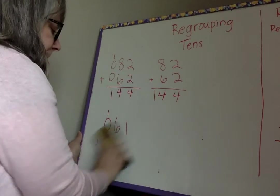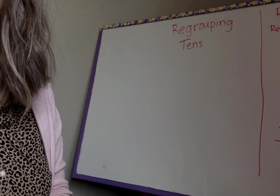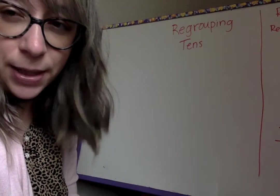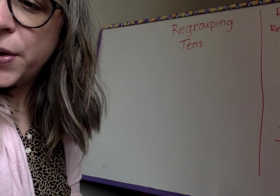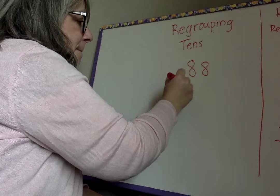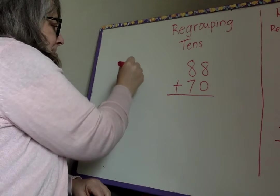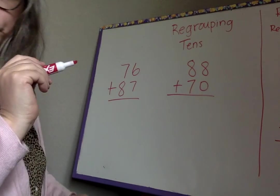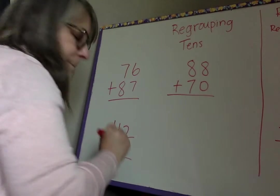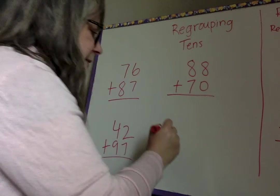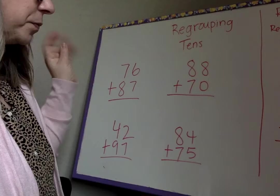Let's practice a few more. Because I may just try to, oh, we'll regroup 1s and 10s tomorrow. But I don't know. Maybe I'll throw in a bonus regrouping 1s and 10s. We'll see. I don't know. It just depends. All right. So let's do 88 plus 70. And let's do 76 plus 87. 42 plus 97. And let's do 84 plus 75. Okay. All right. Let's get to it.